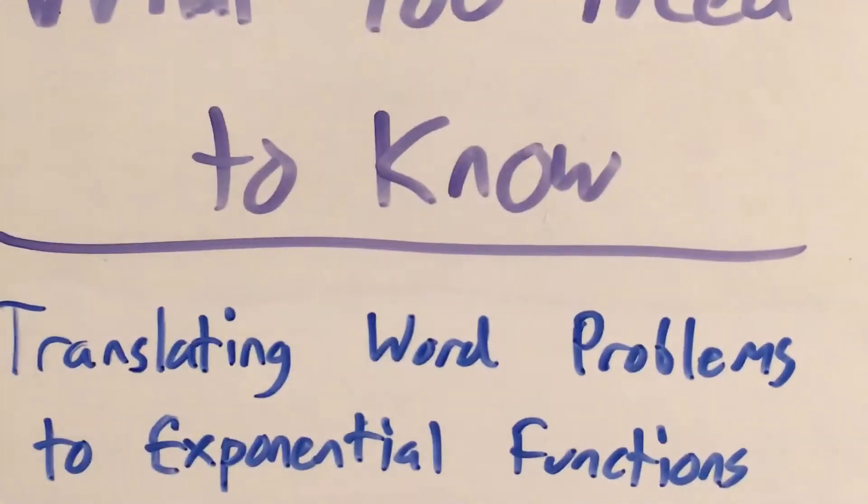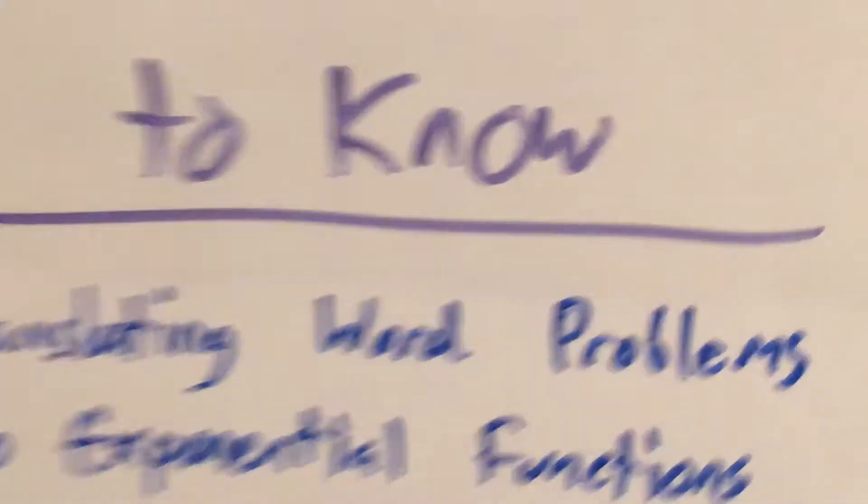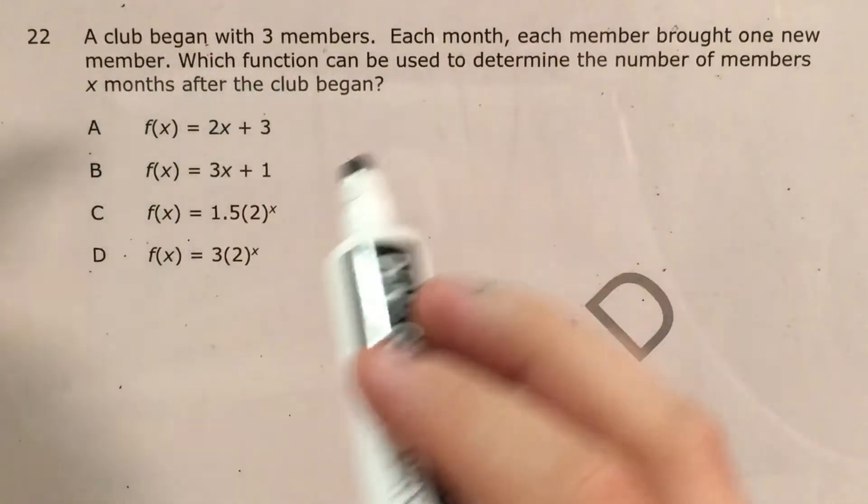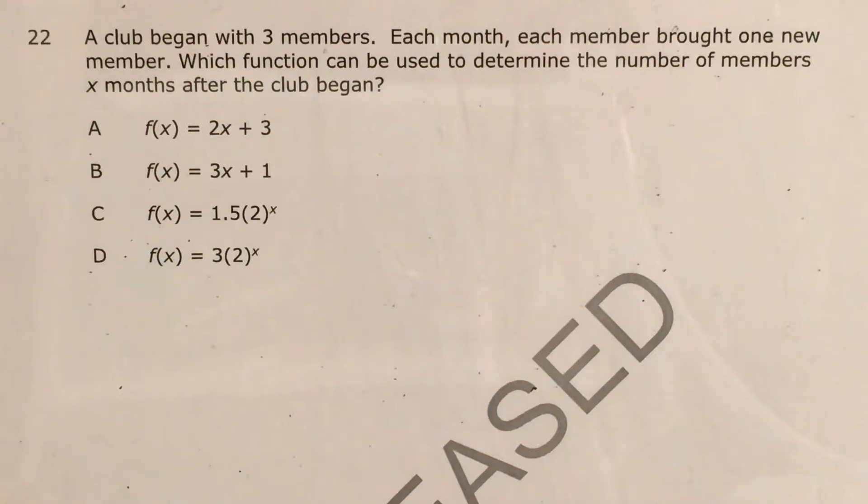Now this is going to deal with exponential functions, specifically translating word problems to exponential functions. What does an exponential function mean? Well, an exponential function means that to get from one value of x to the next one, we multiply by the same thing every time. So if I actually look at the wording of this problem, I can demonstrate that.